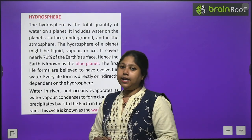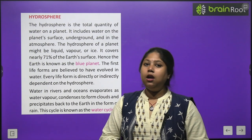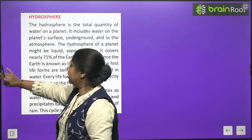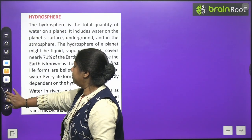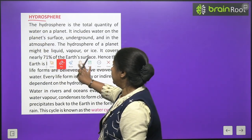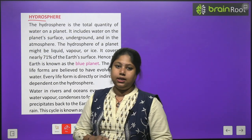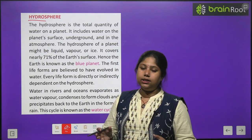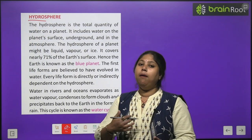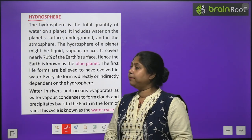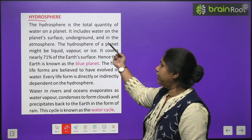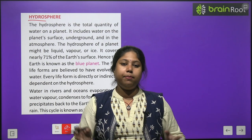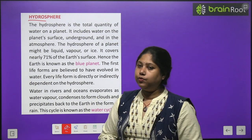Now we will study the second realm of Earth — the Hydrosphere. The word 'hydrosphere' comes from 'hydro,' and hydro means water. This realm of Earth deals completely with water. The hydrosphere is the total quantity of water on the planet — all the water on our Earth together makes up the hydrosphere.